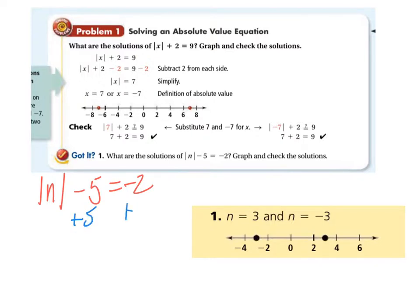So what that looks like is absolute value of n minus 5 equals negative 2. You obviously start by adding 5 to both sides, adding 5 to both sides. So the absolute value of n equals 3. And what two numbers qualify for that? Well, 3 and negative 3. And again, you can graph those. It's filled in dots on a number line.